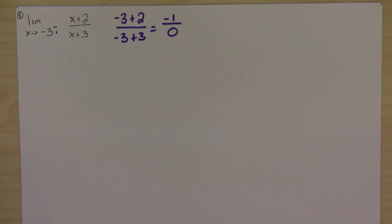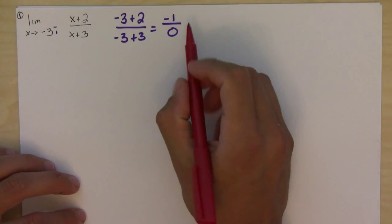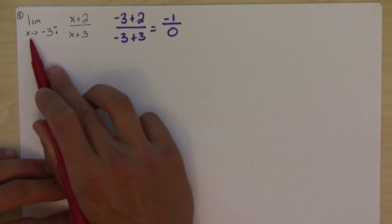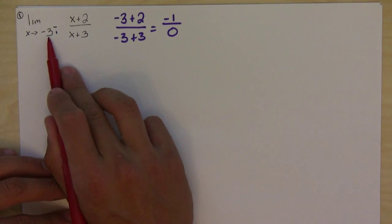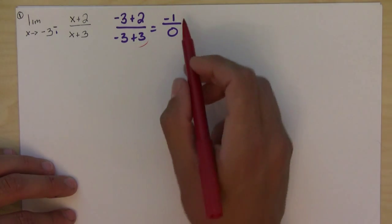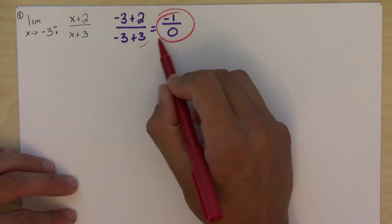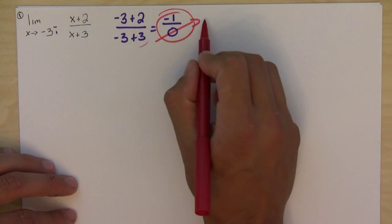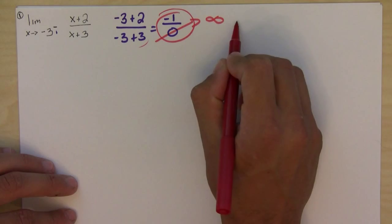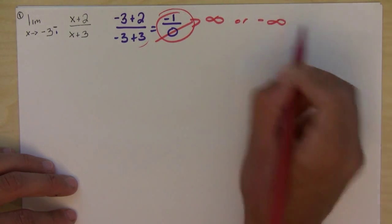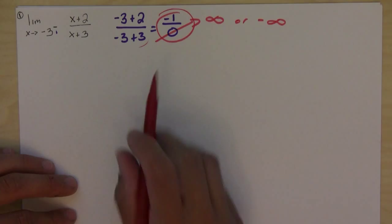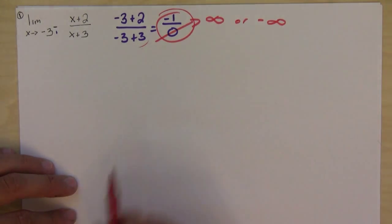What's happening here is that as the x value approaches negative 3, the denominator is getting closer and closer to 0, which means that this entire fraction is going to either infinity or negative infinity. And that's our goal — to figure out which one it's going to.